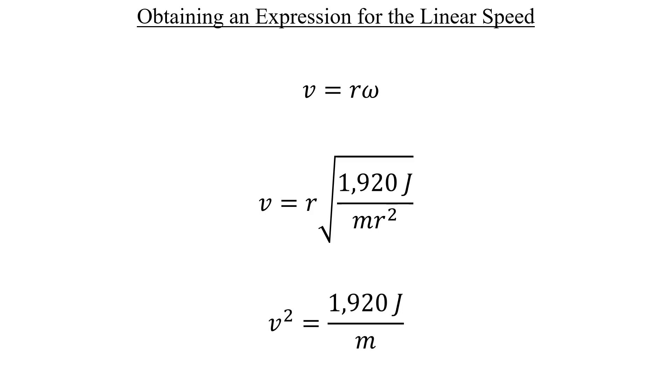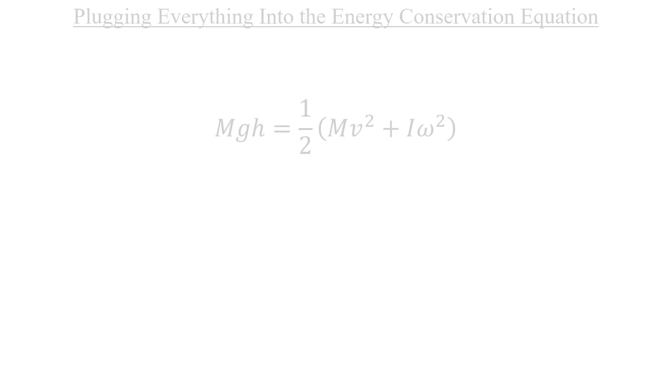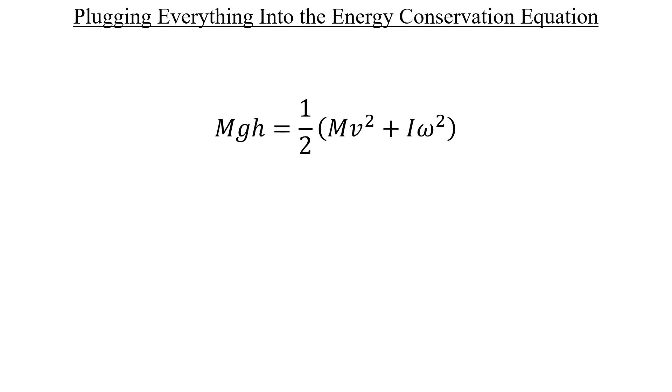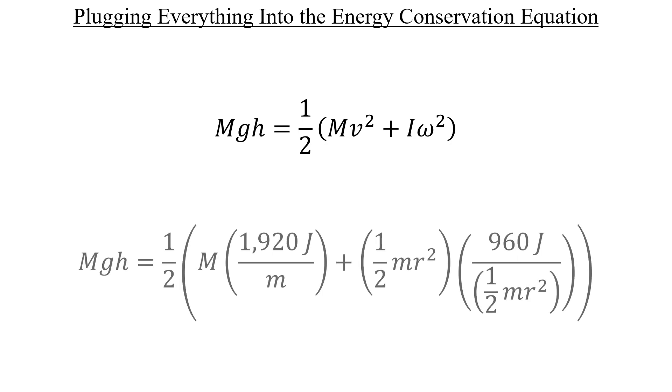And now we have everything that we need to solve for h. So let's go back to that equation from the conservation of energy and plug in our expressions for V squared and omega squared. And what's nice is that the expression for the moment of inertia of the cylinder here will cancel out with the same expression down here.